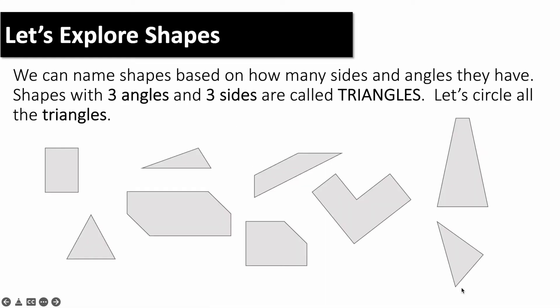You're going to open by reminding students that yesterday we looked at two-dimensional shapes. We can also name shapes based on how many sides and angles they have. Any shape that has three sides and three angles is called a triangle. Everyone say that: triangle. And the word triangle starts with 'tri' — tri means three, kind of like a tricycle has three wheels.